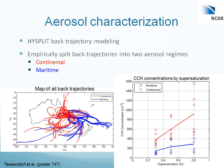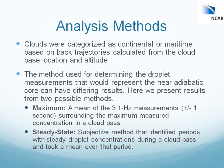We used a back trajectory model — in particular the HYSPLIT model — and empirically split the back trajectories into two aerosol regimes: continental and maritime, based on whether the air trajectory spent the majority of time over land or over water. The results for cloud condensation nuclei concentrations by regime showed that more maritime back trajectories had much cleaner measurements — lower CCN concentrations — while the more continental back trajectories had higher CCN concentrations and higher aerosol loading.